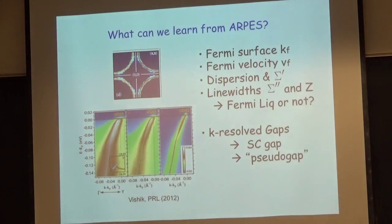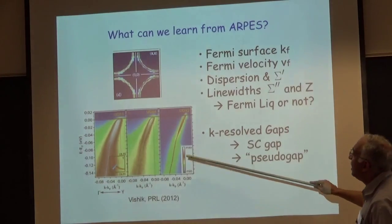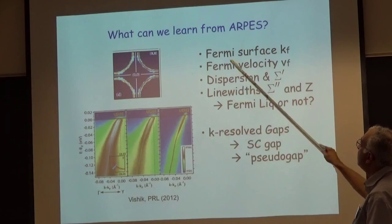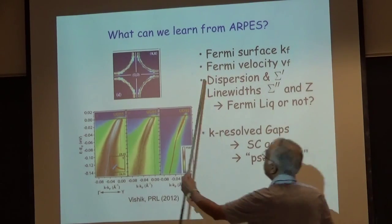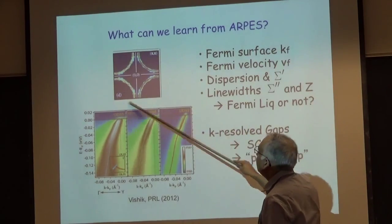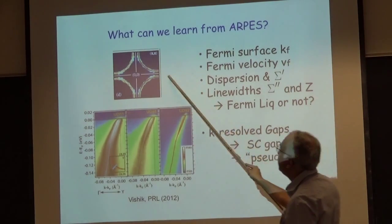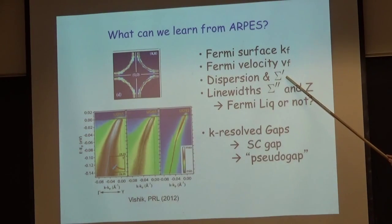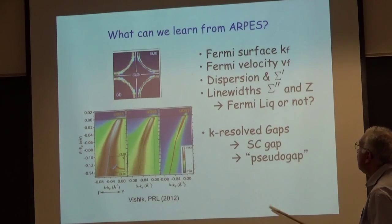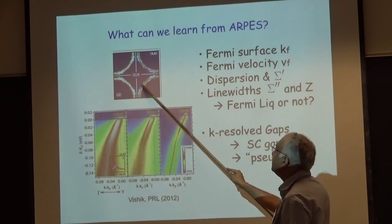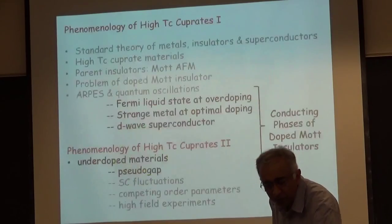What can we learn from ARPES? By looking at the dispersion — this is energy versus momentum — you can find the Fermi velocity; it's just the slope. By looking at the spectral function at zero energy, at the chemical potential, where the intensity is highest, you can learn about the Fermi surface. Then you can analyze things in greater detail to understand sigma prime and sigma double prime. And as I'll show you, it will be very important to look at momentum-resolved gaps: how does the Fermi surface gap out — the superconducting gap and the pseudo-gap?